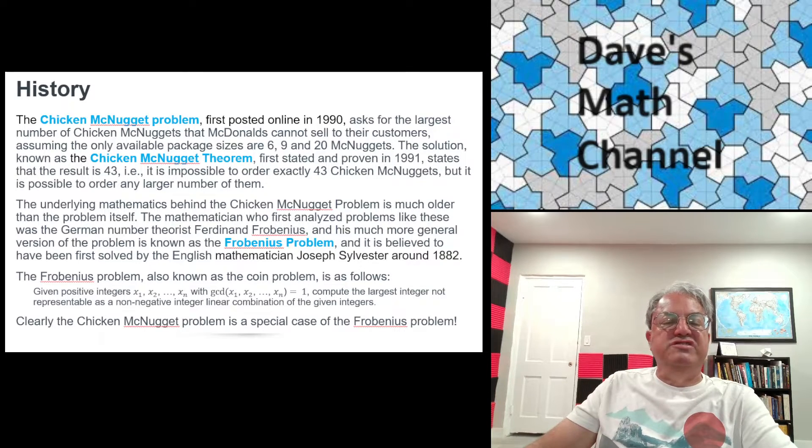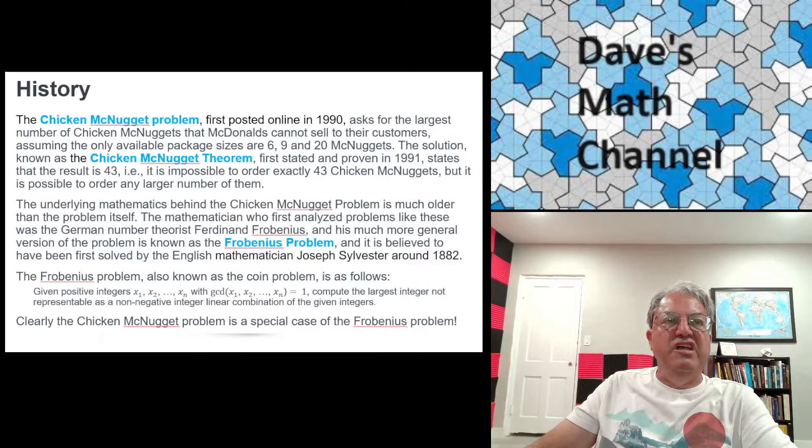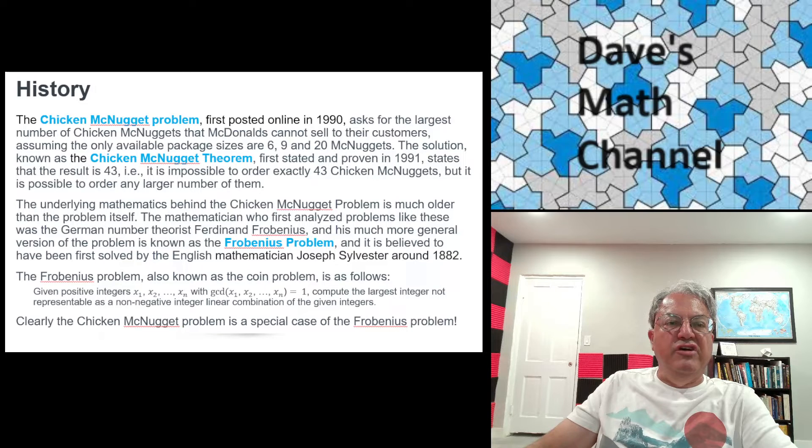So the Frobenius problem just says, suppose you have n numbers, n positive integers, call them a1, a2 up to an. And the problem asks, what linear combinations, x1 a1 plus x2 a2 to xn an, can you have, where x1, x2, and up to xn are all non-negative integers?